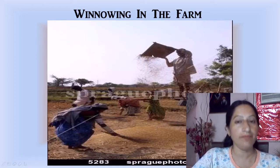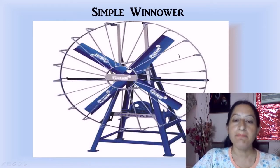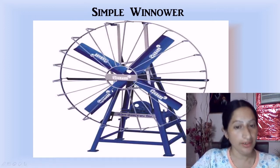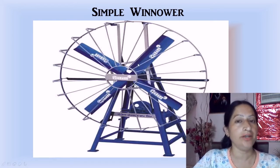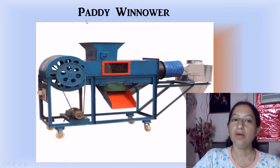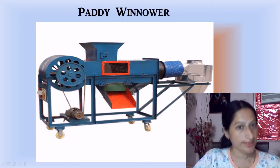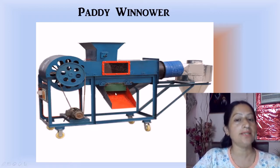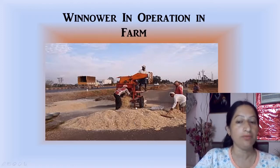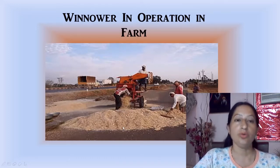The height allows the wind to separate the seeds. There is also a simple winnowing machine where wind is provided by a fan fixed in the machine. The farmer brings the husk and grain mixture and allows it to fall in front of the fan, separating the husk from the grain. This machine is called a paddy winnower, where paddy means rice, so rice is separated from husk using this machine.